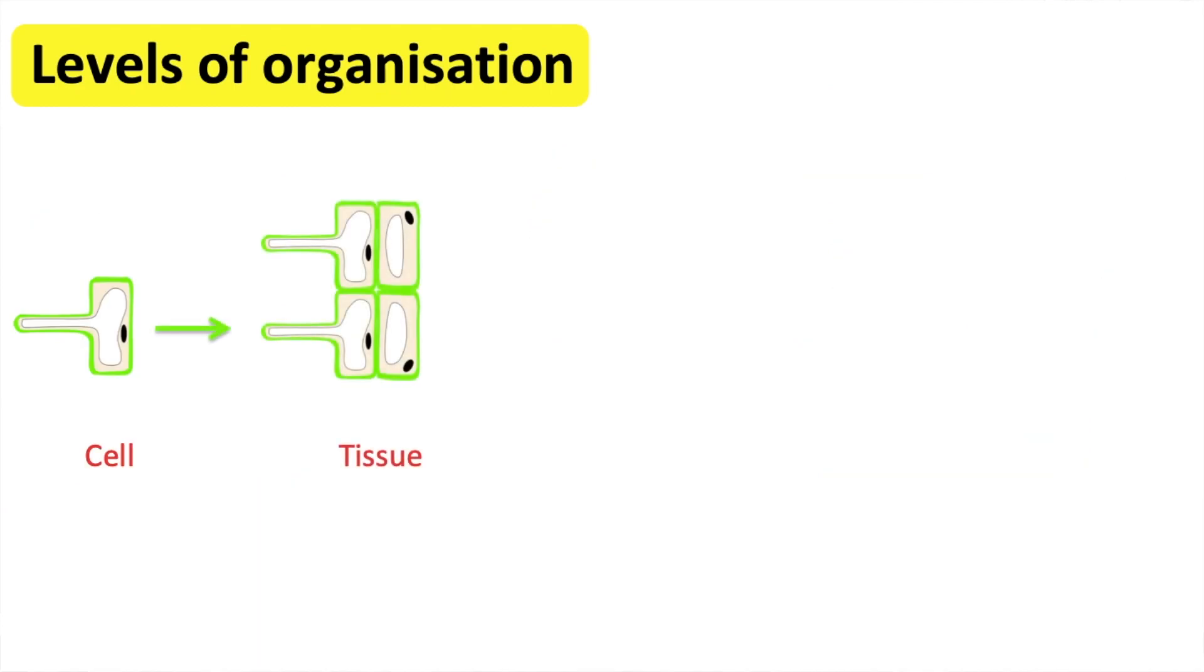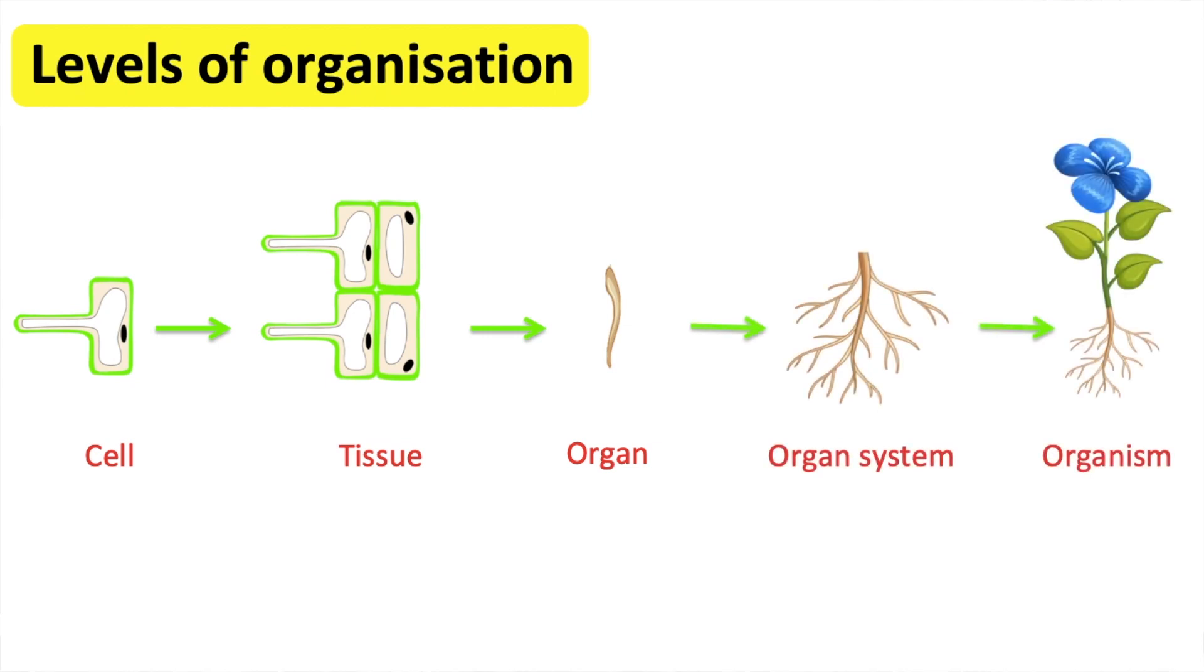Root hair cells work together to form root tissue. Root tissue then combine to form roots of the plant. These then make up the transport system. The transport system makes up part of a plant. So, the different systems work together to make up the plant.